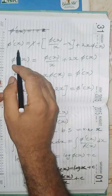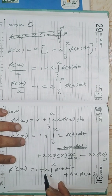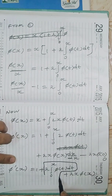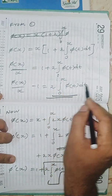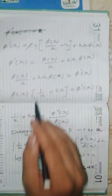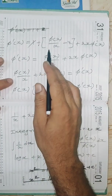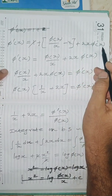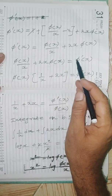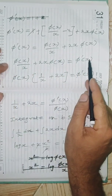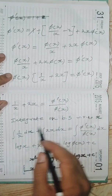Continuing the simplification: π'(x) = 1 + π(x)/x - 1 + 2x·π(x). The 1 and -1 cancel, giving π'(x) = π(x)/x + 2x·π(x). Rearranging: π'(x)/π(x) = 1/x + 2x. This is now a separable ordinary differential equation. Integrating both sides with respect to x.